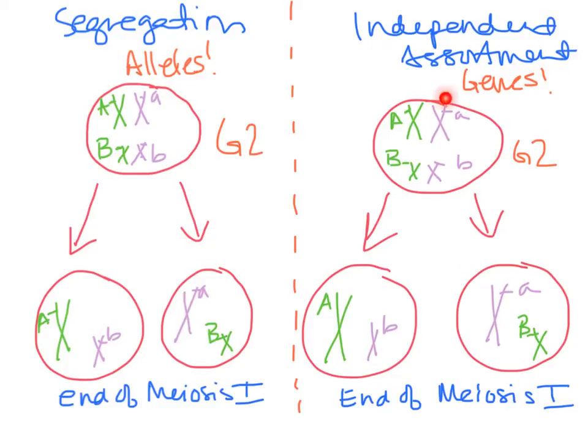It's a complete random assortment of how the different genes show up in the gametes. So independent assortment is genes coming apart, not linked together. The law of segregation is the alleles coming apart — they're not linked together in the gametes.